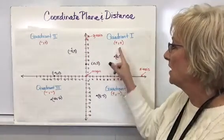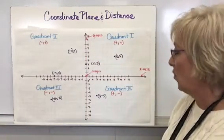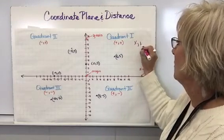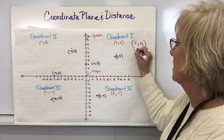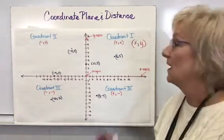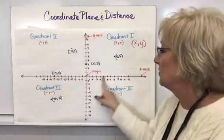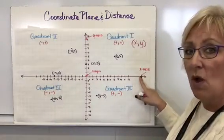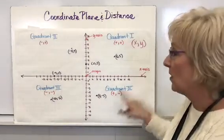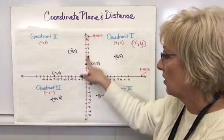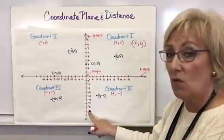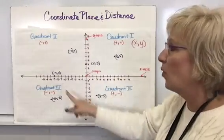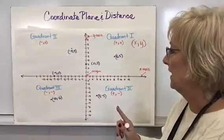When talking about these points, x will always go before y. Think about it — x comes before y in the alphabet. So your x, which is the horizontal number line, will always come first, and then we label it with the y coordinate.